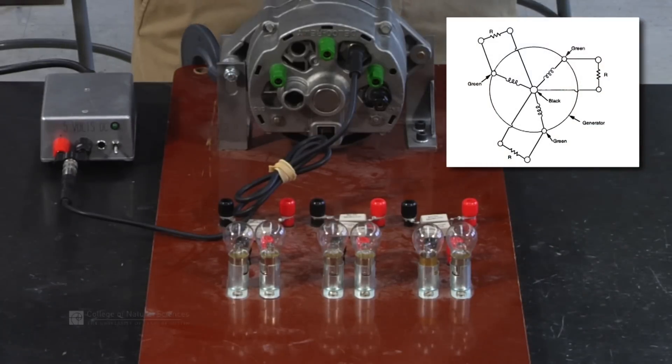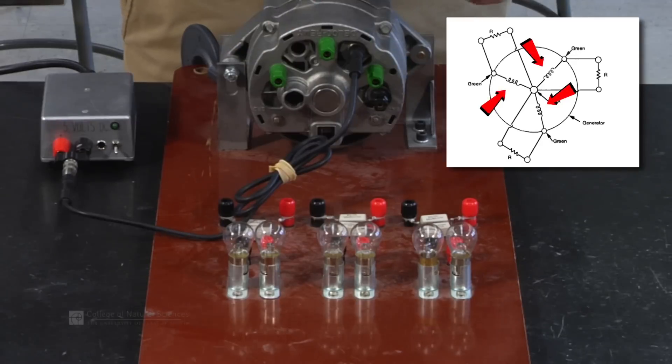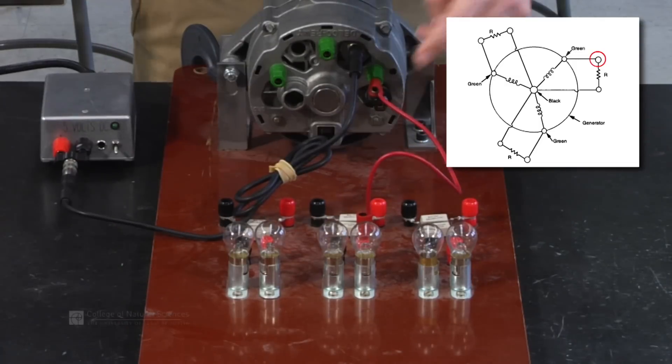Now to hook up the light bulbs, we're going to hook the coils, the induction coils, or inducing the current, into the light bulbs by connecting the green to the red.